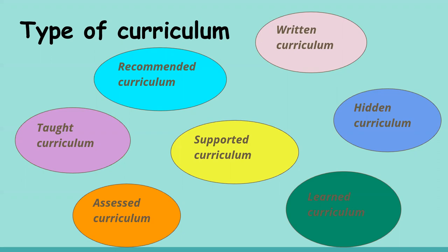In some cases, a lawmaking body, a university, or a school can recommend a subject, a course, or any academic program deemed necessary for national identity and security, for environmental protection, and sustainable development, among others.